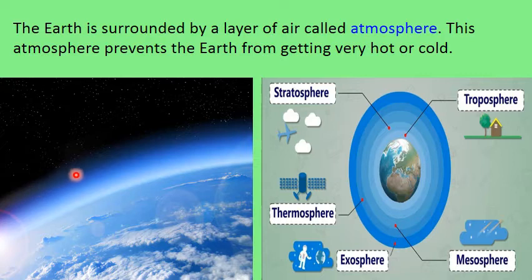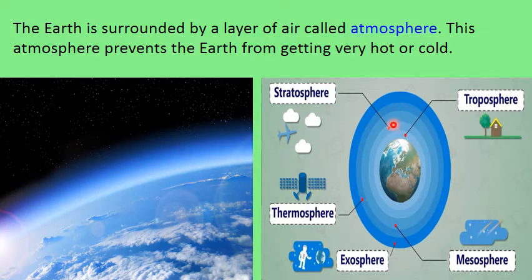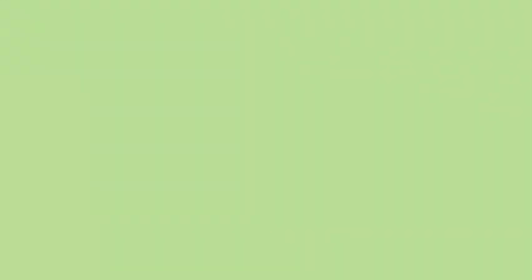The earth is surrounded by a layer of air called the atmosphere. This atmosphere prevents the earth from getting very hot or very cold. During daytime, the atmosphere absorbs a certain amount of sunlight and prevents the earth from getting very hot. During nighttime, the atmosphere slows down the escape of heat from the earth, preventing it from getting very cold. In this picture, you can see the different layers of the atmosphere.